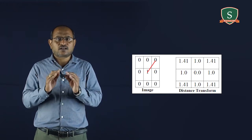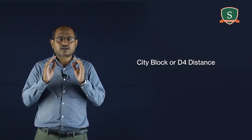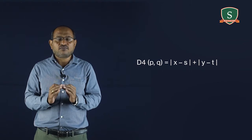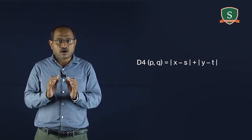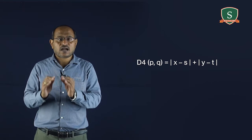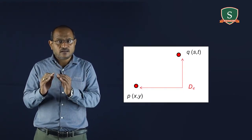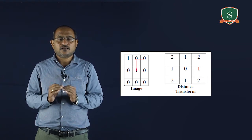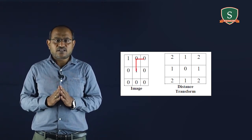The matrix shown is the calculation of Euclidean distance. Next is city block or D4 distance. The city block distance metric measures the path between pixels based on the four-connected neighborhood. Pixels whose edges touch are one unit apart and pixels diagonally touching are two units apart. The formula is: D4 of p, q equals the magnitude of (x minus s) plus the magnitude of (y minus t). Pixels having a D4 distance from x, y less than or equal to some value form a diamond centered at x, y.